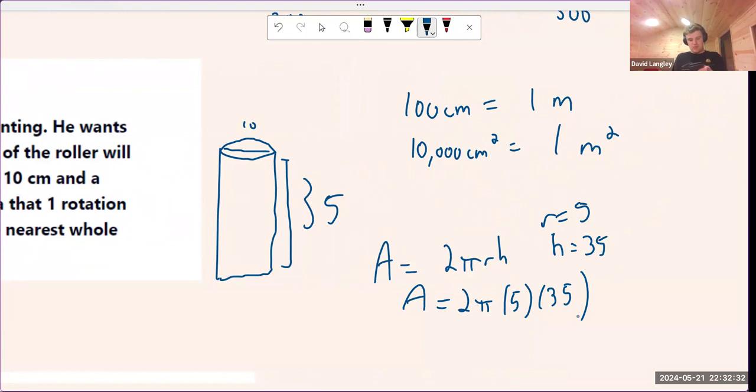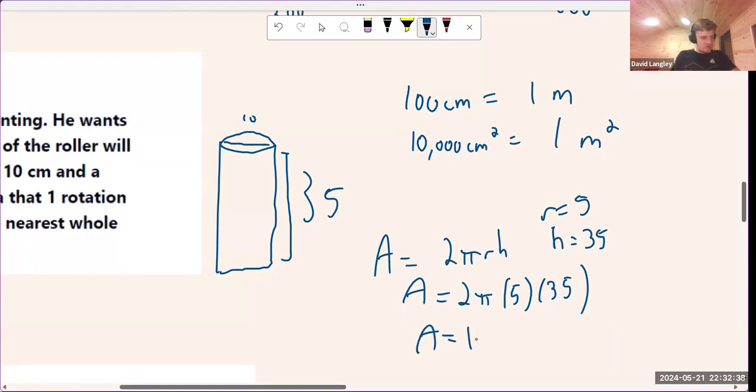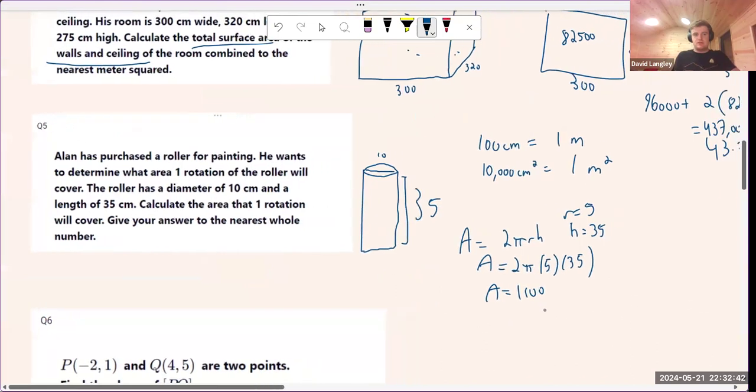And it's to the nearest whole number, so we're going to go 2 multiplied by π, multiplied by 5, multiplied by 35. And that is going to give us A equals approximately 1,100 centimeters squared. And again, we're talking about area, so it's centimeters squared.